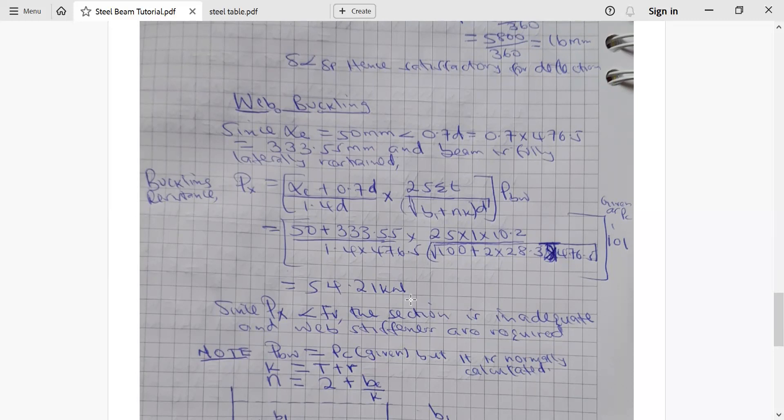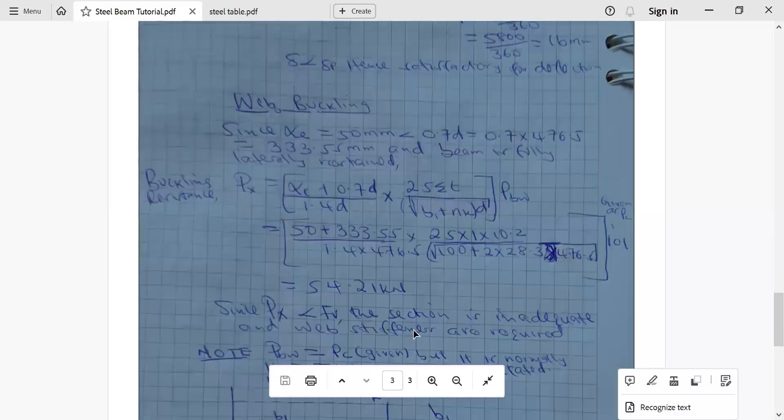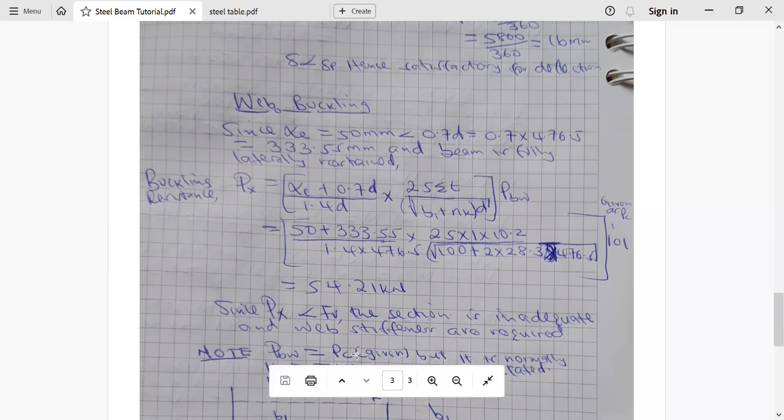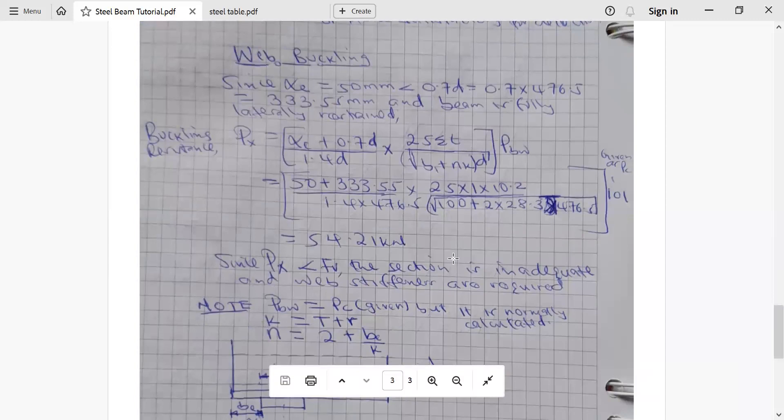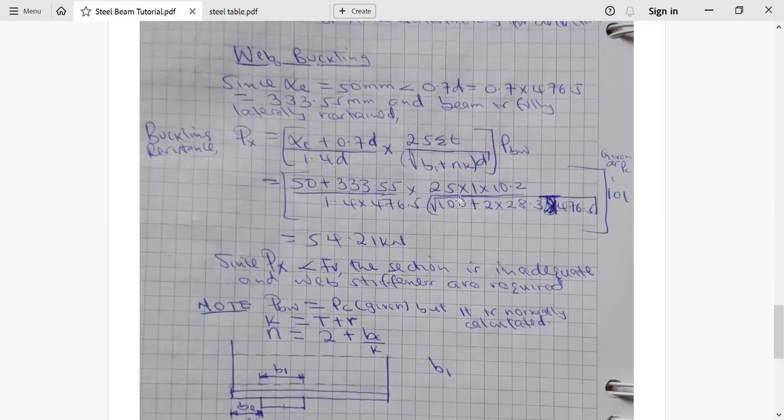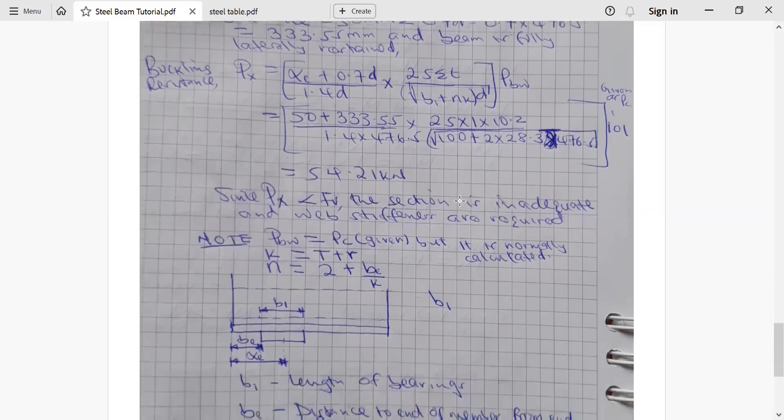And note that in this question, like I've told you, this pbw, the web bearing capacity, we've replaced it, we've taken it as equivalent to this pc, which was given. And then k, this k we've used here, we've used in our equation here, is given by the flange thickness plus root radius. And N is calculated using as 2 plus BE over K. BE over K. Let me now show you this is a different part.